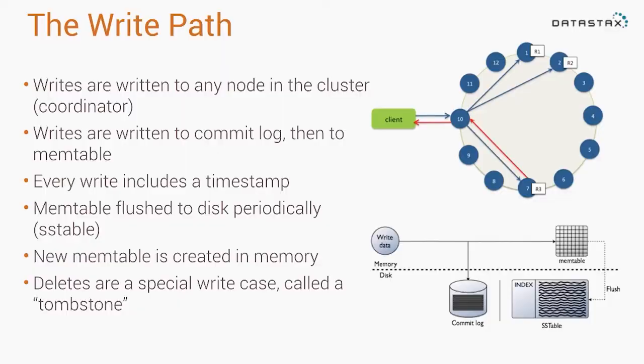The fact that the write path on a single node can be explained in 30 seconds or less is part of the reason why Cassandra is so fast at writing data. People sometimes talk about Cassandra as a write-optimized database — it's really, really good at ingesting lots of data quickly, and part of the reason is the simplicity of that write path.